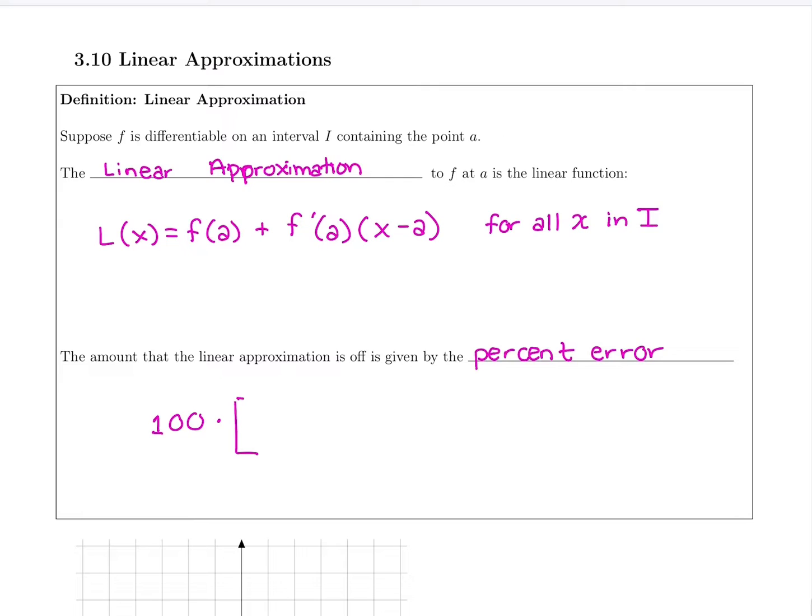But just if you're curious of how far off you are from the answer, you would do 100 to make it into a percent times the approximation you found minus the exact answer, which you would need a calculator to figure out, divided by the exact answer.